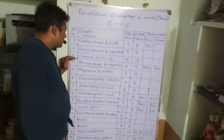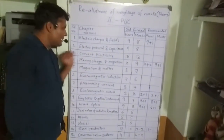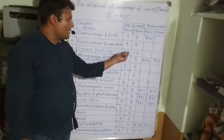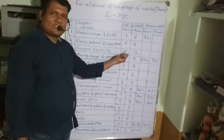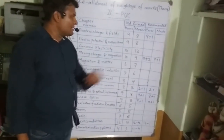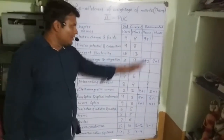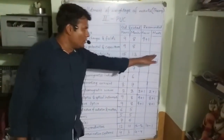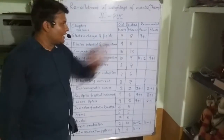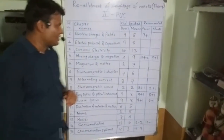For the third chapter, Current Electricity, the teaching hours is 15 and marks is 13. No changes have been made in the recommended section.